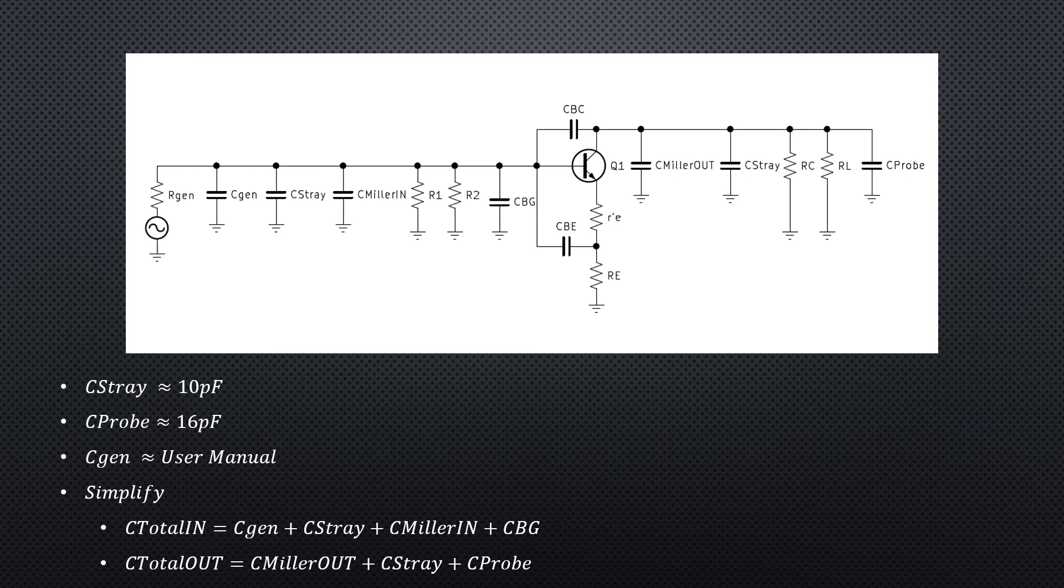Now let's talk about stray capacitance. Stray capacitance will be seen on the output and input, approximately 10 picofarads. If you hook your probe to the output while measuring, you'll see approximately 16 picofarads also. You'll also have some generator capacitance that you'll need to look up in your specification or user manual.